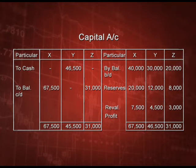In the capital account, opening balances on the credit side are X: 40,000, Y: 30,000, Z: 20,000. Reserves are distributed as 20,000, 12,000, and 8,000 respectively. Revaluation profits are distributed as 7,500, 4,500, and 3,000. The total amount due to Y is paid in cash — 46,500 — and the remaining partners' balances are carried forward to the balance sheet.